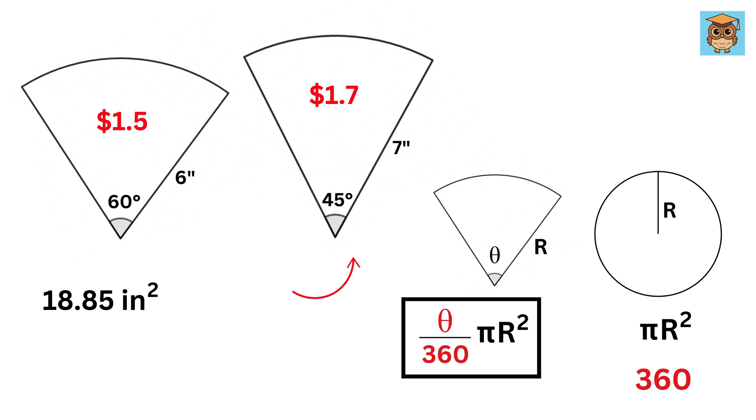For this slice, we will get 45 upon 360 times π times 7². This will get cancelled out, and here we will get 8. So it will be 49π over 8, which is roughly 19.24 in².